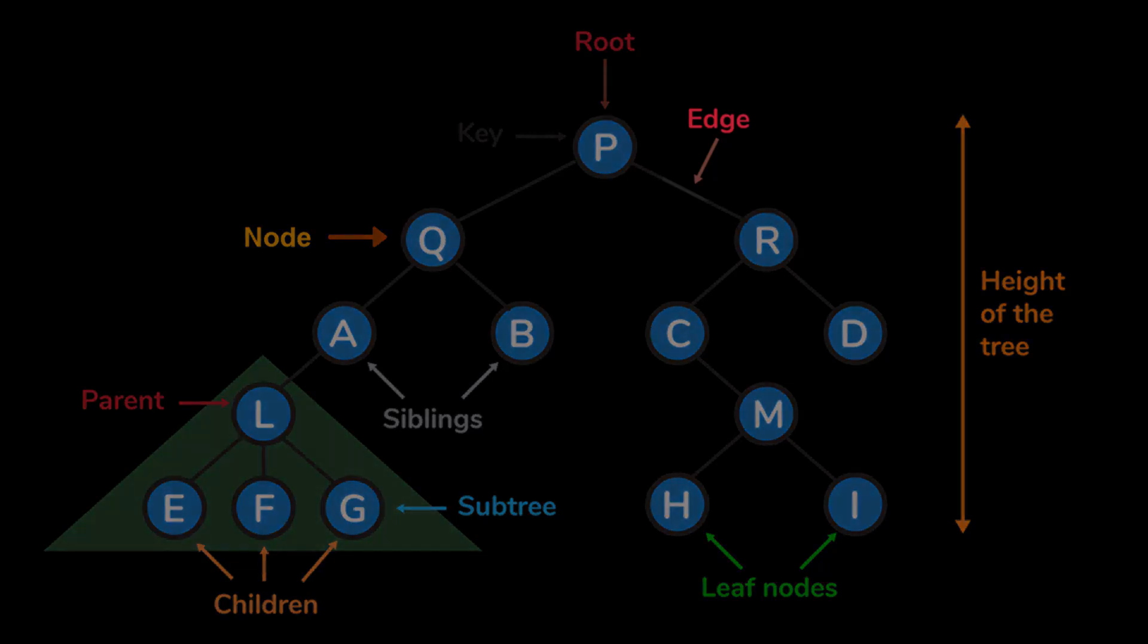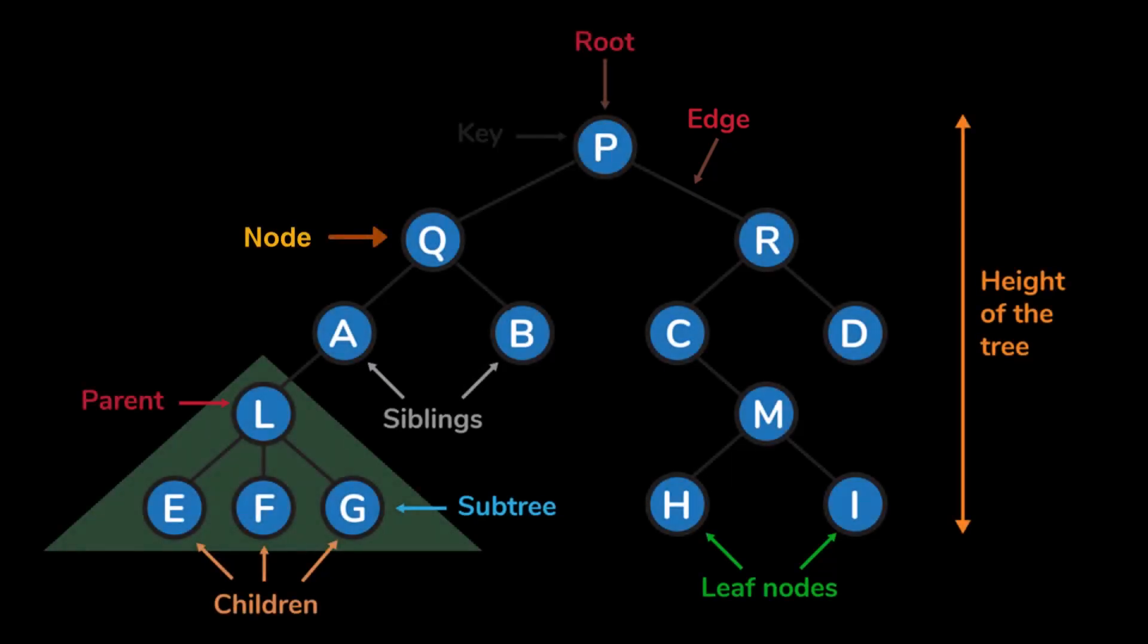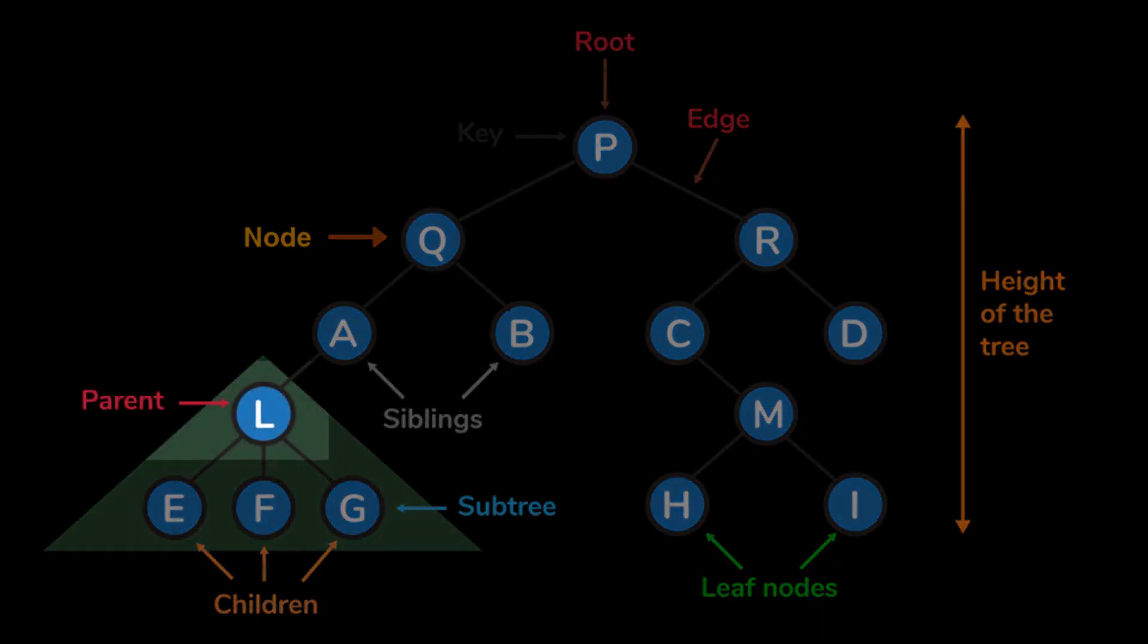Edge is the connection between nodes in a tree. It represents a relationship or link between nodes. And a parent node is a node that has one or more child nodes connected to it. Child nodes are the nodes that are connected to parent nodes. Child nodes are at a lower level in the hierarchy compared to their parents.